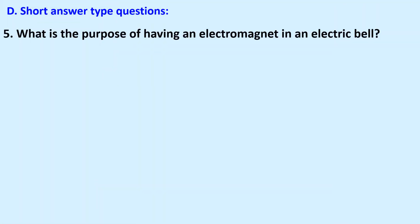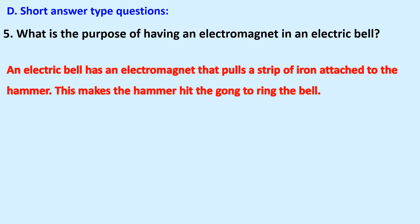What is the purpose of having an electromagnet in an electric bell? An electric bell has an electromagnet that pulls a strip of iron attached to the hammer. This makes the hammer hit the gong to ring the bell.